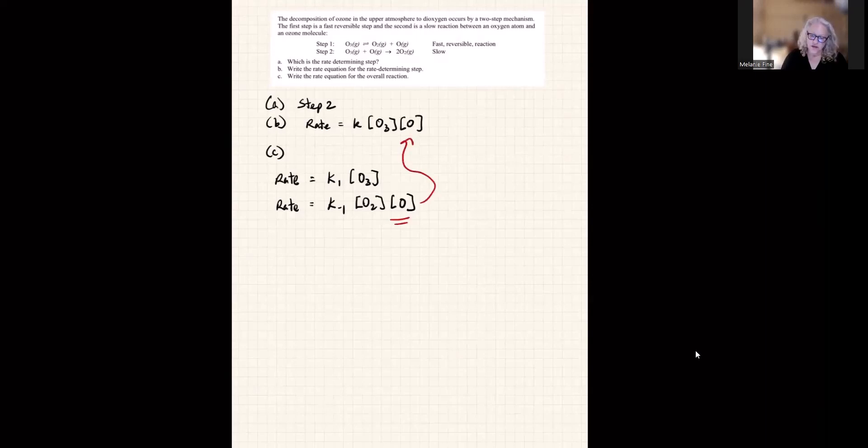So let's do that. We know that these rates equal each other. Rate 1 equals rate negative 1. So that K1 O3 is equal to K negative 1 O2 O. To get O by itself, we're going to divide it by K negative 1 O2.